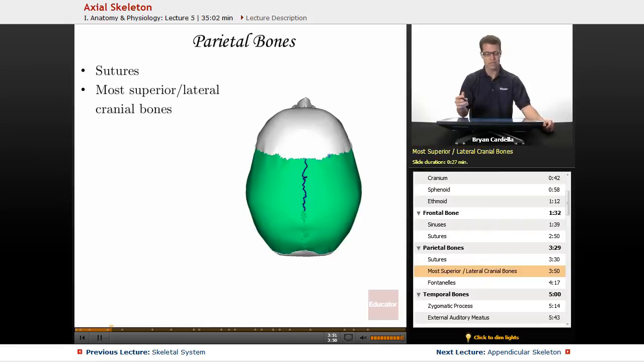The two parietal bones together are the most superior and lateral cranial bones in the entire skull because they're right up here on the top. You can see the little bulges on the side. This part of the skull right here is the most to the side of any other part of the head. You can see that I don't list sinuses here. There aren't any major sinuses in the parietal bones.